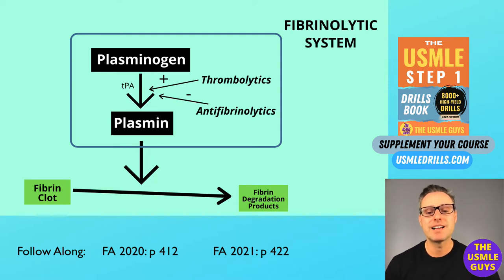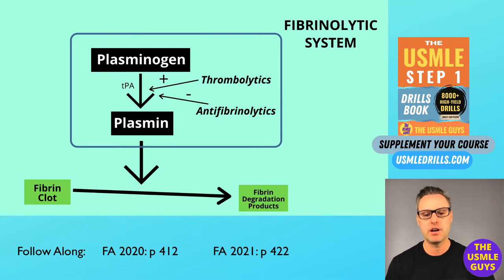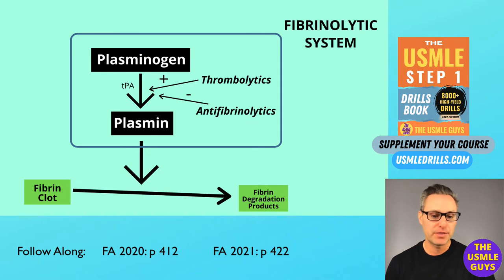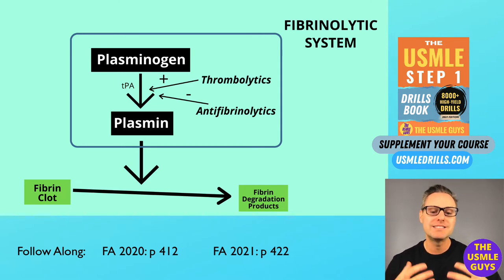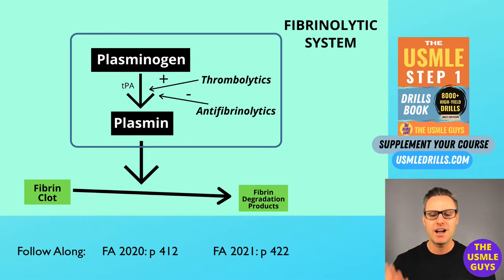The class of medications known as antifibrinolytics, based on their name, will inhibit fibrinolysis. These work by interfering with the formation of plasmin from plasminogen — by either binding to sites on the enzymes or plasminogen — thus interfering with plasmin formation and halting the process that would otherwise degrade a fibrin clot. This is a crash course, but I wanted to review some of the high-yield information before we dive into questions.